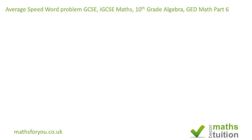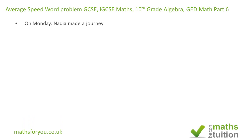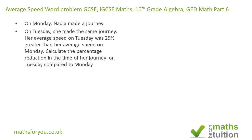Welcome to part six in my series on average speed. This exercise was suggested by one of my IGCSE students and it's a higher tier question, suitable for GCSE and 10th grade algebra. I'll suggest two methods. Here's the question: on Monday Nadia made a journey, and on Tuesday she did the same trip except her average speed increased by 25% compared to Monday. Calculate the percentage reduction in the time of her journey on Tuesday compared to Monday.